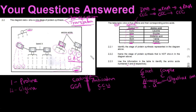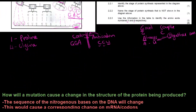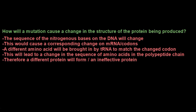Let's look at another possible question: how will a mutation cause a change in the structure of the protein being produced? This model answer is from a memo from a previous exam paper. A mutation causes a change in the sequence of nitrogenous bases on the DNA, which in turn causes a corresponding change on the mRNA, because the mRNA reads and copies the codons of the DNA strand.